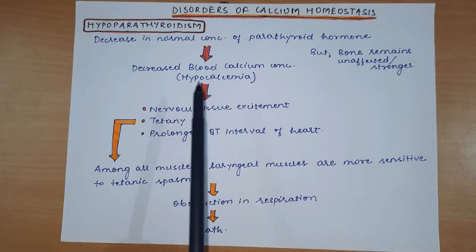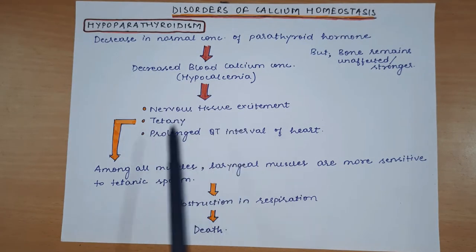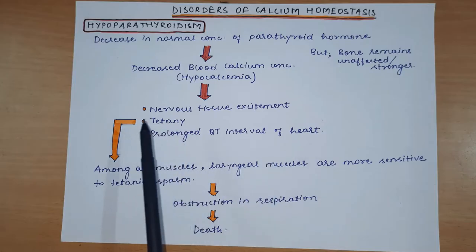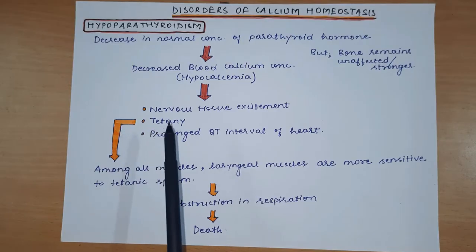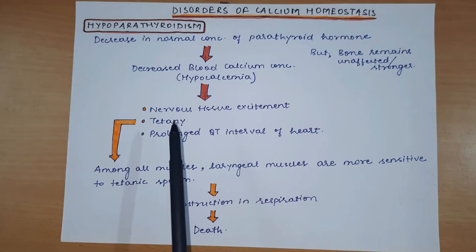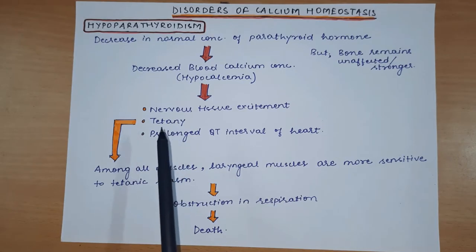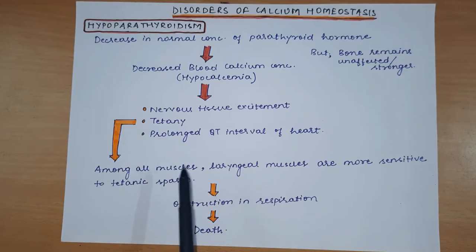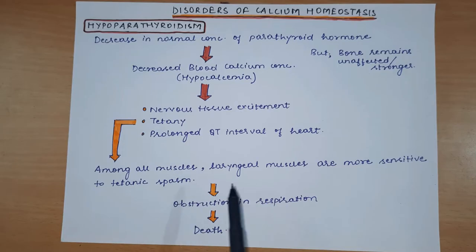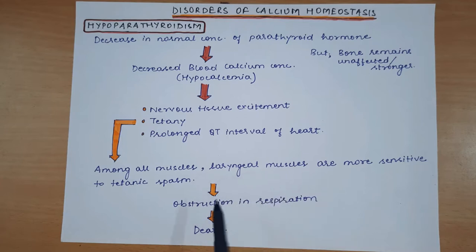We discussed in the previous video that hypocalcemia leads to nervous tissue excitement, tetany, and prolonged QT interval of the heart. In tetany due to hypocalcemia, the first thing seen is carpopedal spasm - that is, the hands are affected first among the limbs. Among all muscles, the most sensitive muscle for tetanic spasm is the laryngeal muscles, and when tetanic spasm of laryngeal muscles occurs, it causes obstruction in respiration.